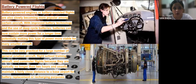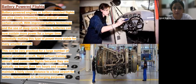Battery-powered engines and battery-assisted flights are slowly becoming more popular among certain aircraft. With improved battery technology and deep-cycle batteries, batteries can now sustain more power for a longer time, potentially making this type of power more viable for many smaller aircraft. This is practical for general aviation aircraft, flight school training aircraft, and commuter flights, which are typically no longer than 2 hours and usually maintain a fairly close distance to a base airport for battery replacement or charging.